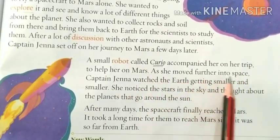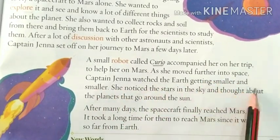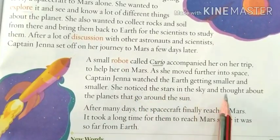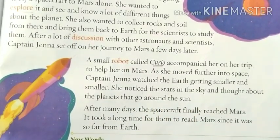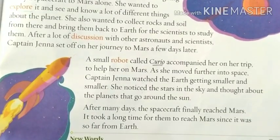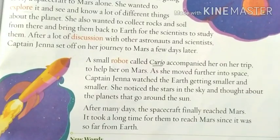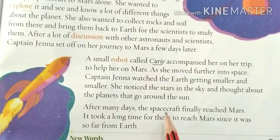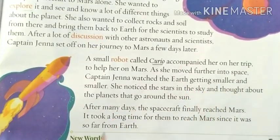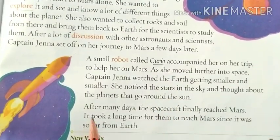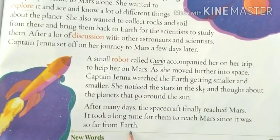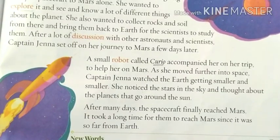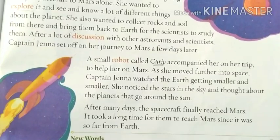As she moved further into space, Captain Jenna watched the Earth getting smaller and smaller. She noticed the stars in the sky and thought about the planets that go around the sun. After many days, the spacecraft finally reached Mars. It took a long time to reach Mars since it is very far from Earth.